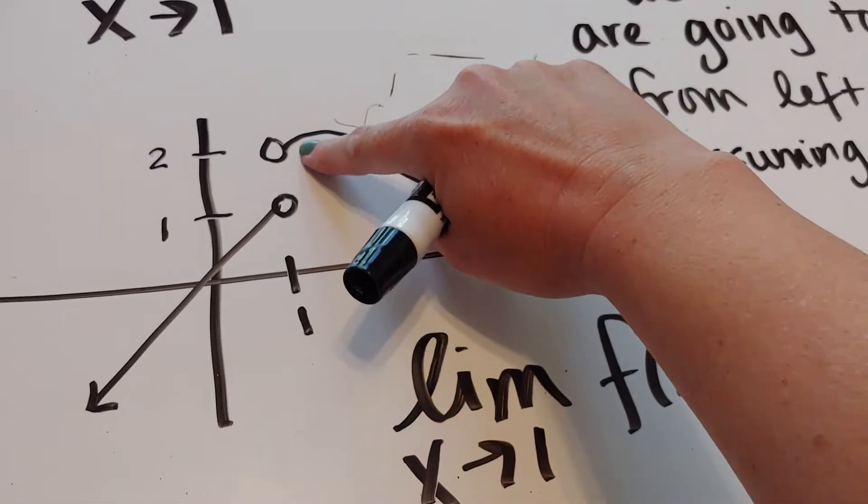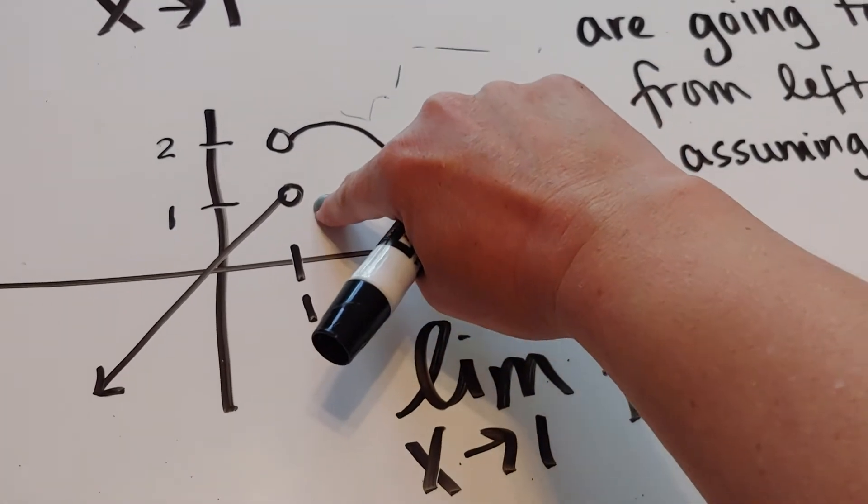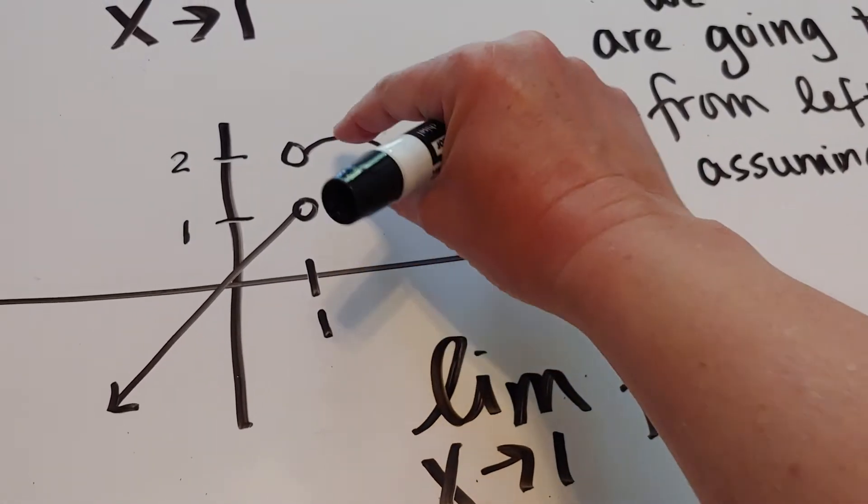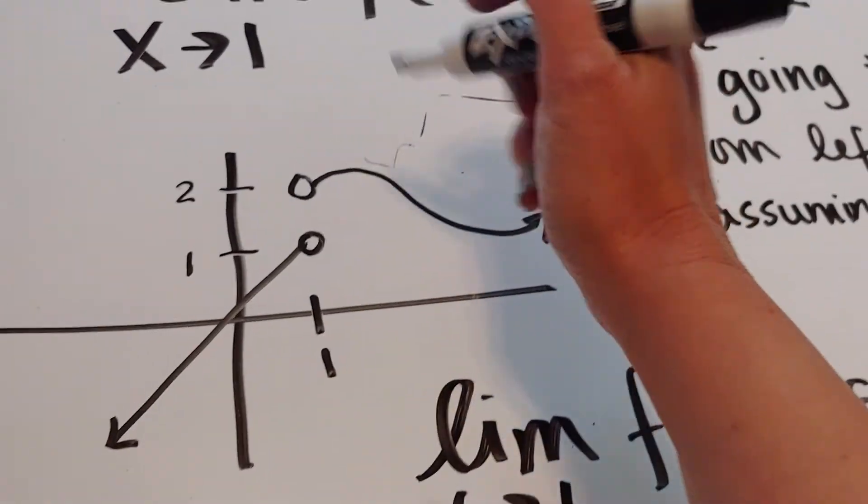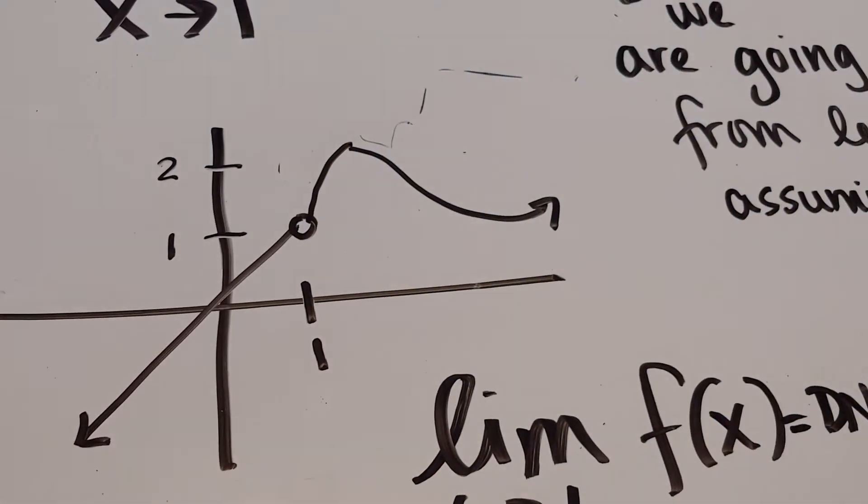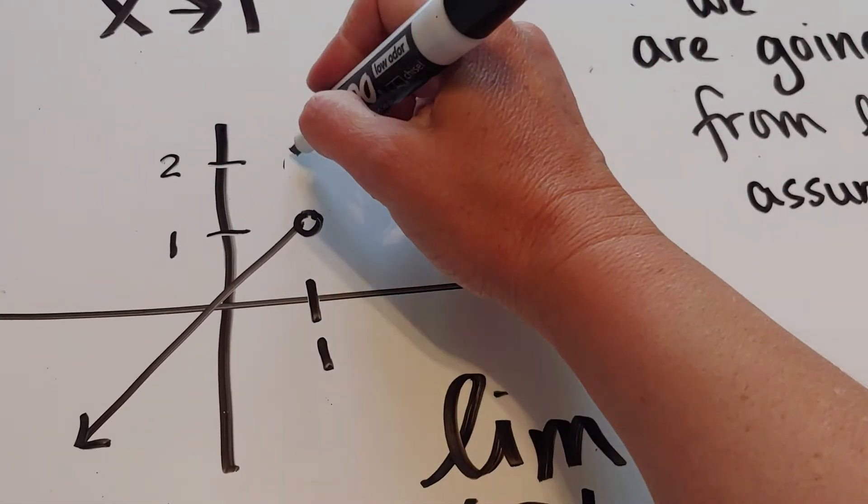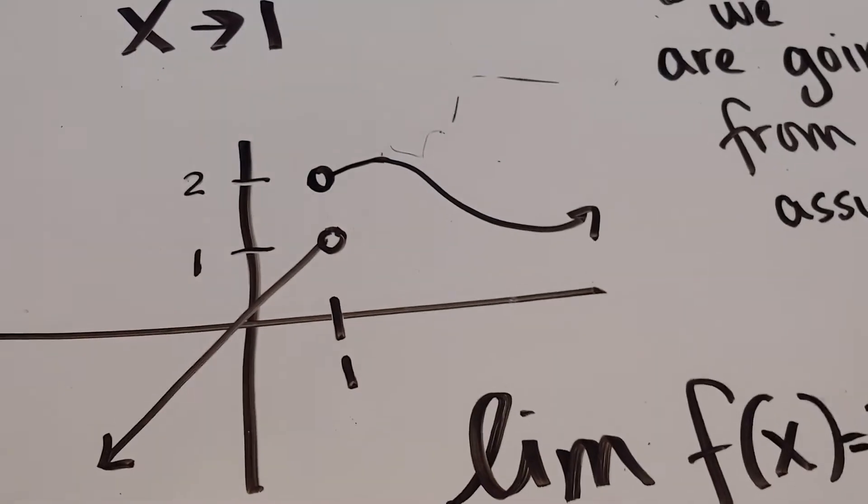When you have a jump, a physical break in the graph, so this is not the hole or removable discontinuity we talked about last time because if this were a hole, it would look like that. It would be connected still, right?